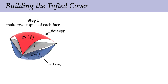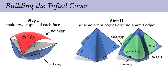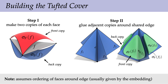More precisely, the construction goes like this: first we make two disjoint copies of every triangle, then glue the vertices back together. Now we have these doubled copies, and around every edge of the original mesh we're going to glue these two copies together front to back around the edge. The only initial data we need is some ordering of faces around the non-manifold edges, which is typically just given by the embedding of the initial mesh. We'll see later that this ordering doesn't make too big an impact on the final results.